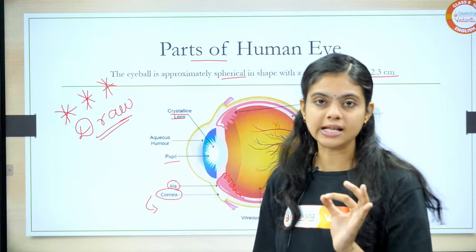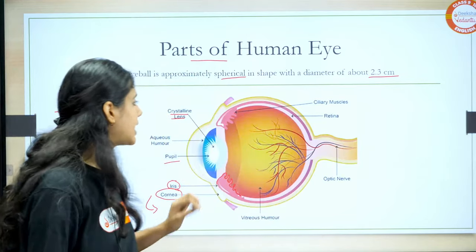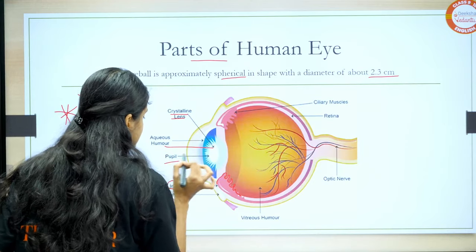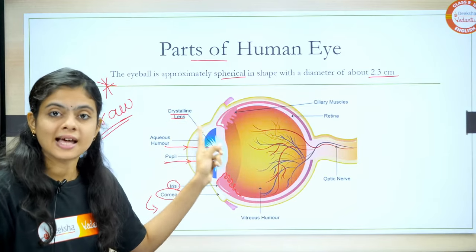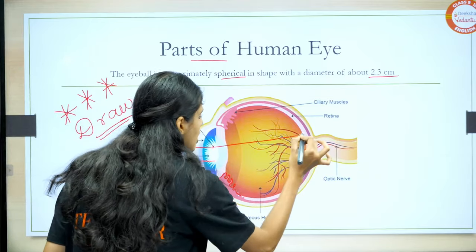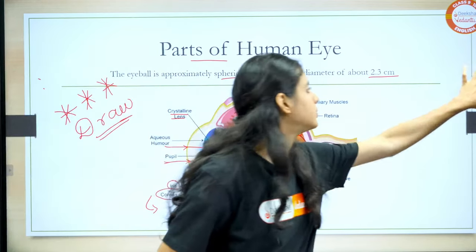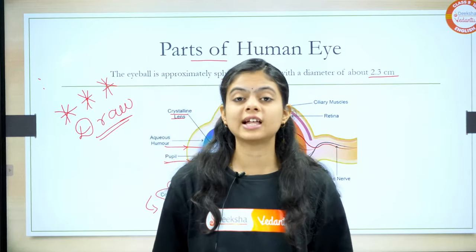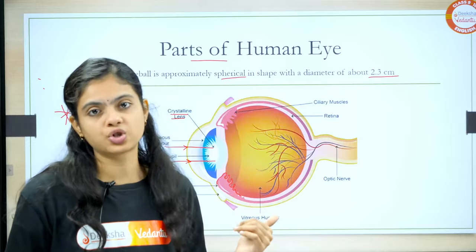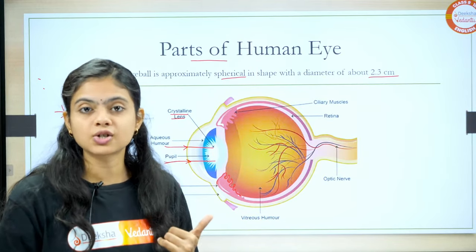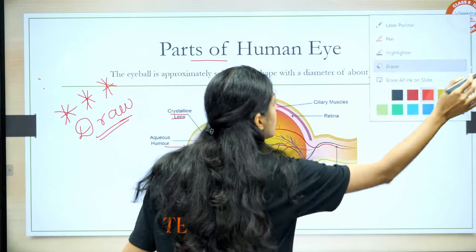So what happens? This crystalline lens ensures that the image is formed on the retina. When light enters by passing through the pupil and falls on this lens, the lens ensures that the image is properly formed. What is the function of the lens? It ensures that image is formed by the process of refraction. Refraction occurs through the lens. So it ensures that the image is formed on the retina.